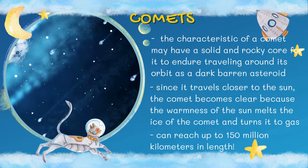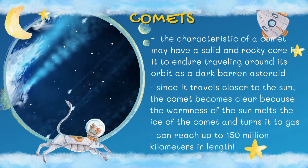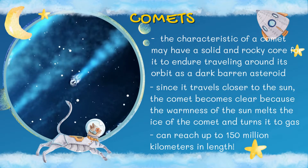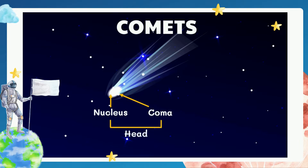Comets don't emit energy and light on their own, so they are not visible. But since they travel closer to the sun, the comet becomes visible because the warmth of the sun melts the ice of the comet and turns it to gas. This gas develops into a coma, which covers and hides the nucleus from our view. One part of the comet is the so-called head, composed of a nucleus and coma. It becomes bigger as more gas and dust are released. The radiation blows more gas from the coma, causing it to create a tail, which in some comets can reach up to 150 kilometers in length.